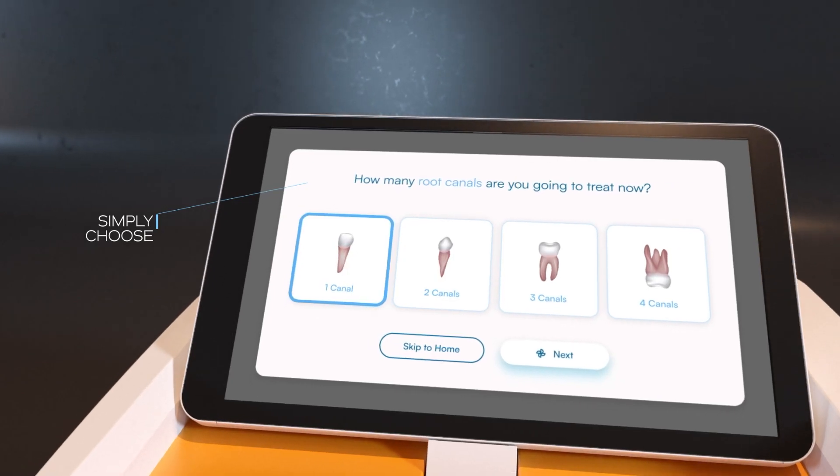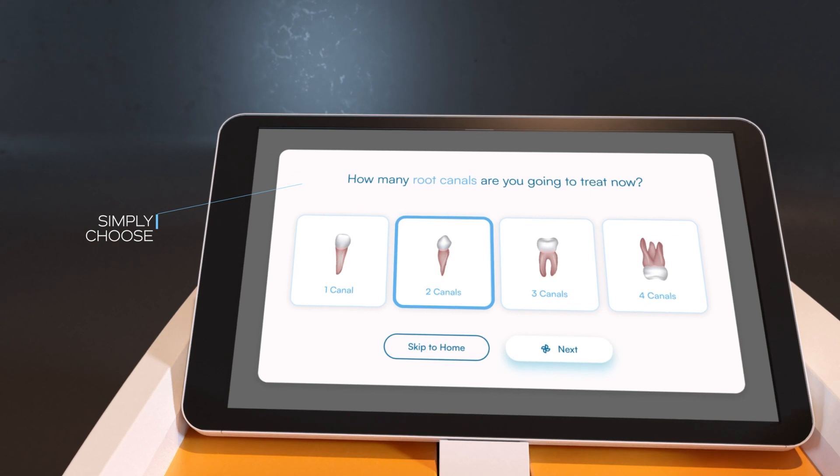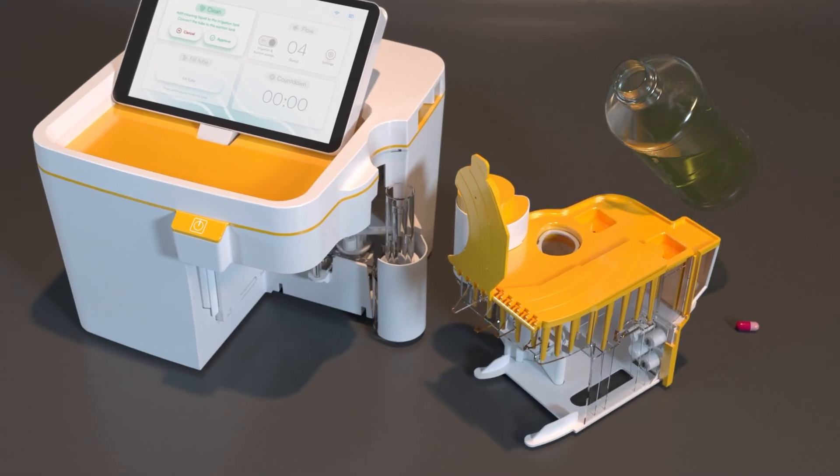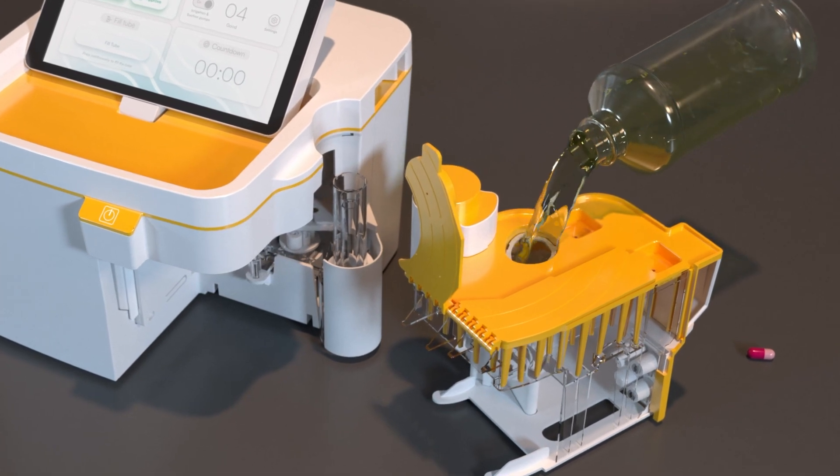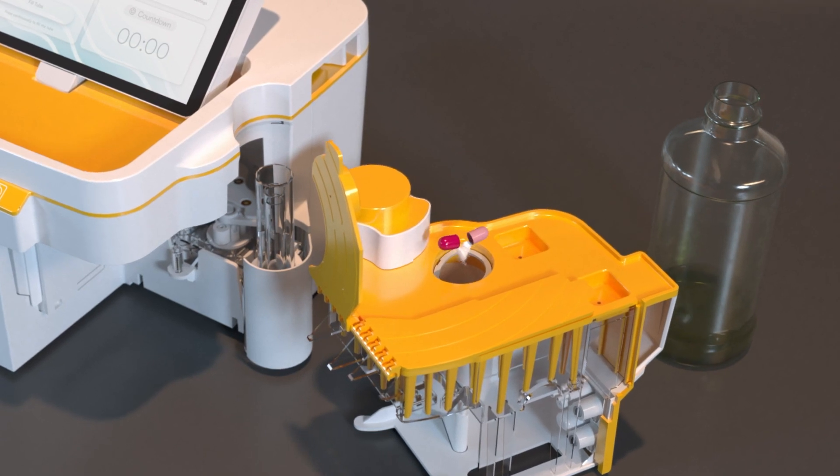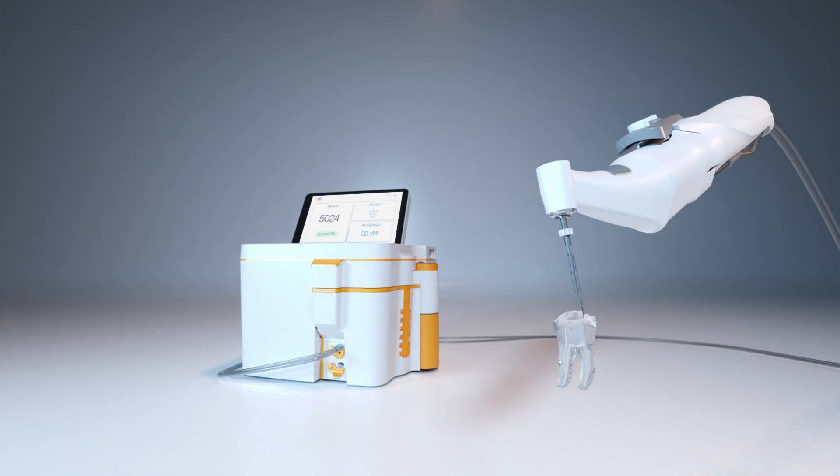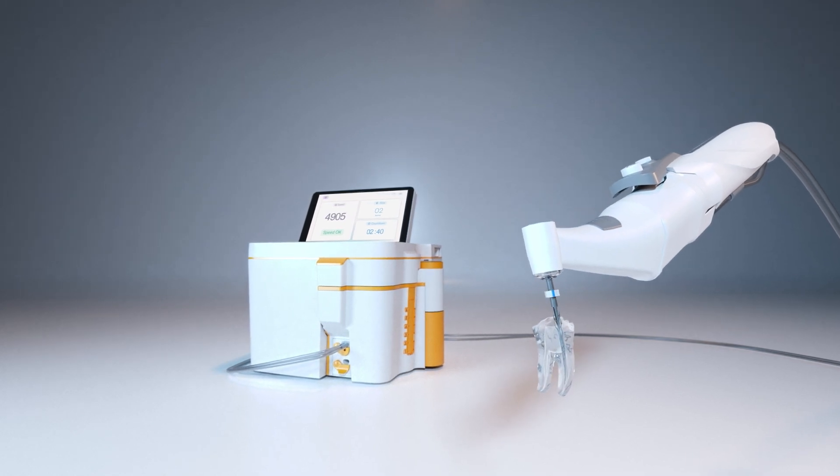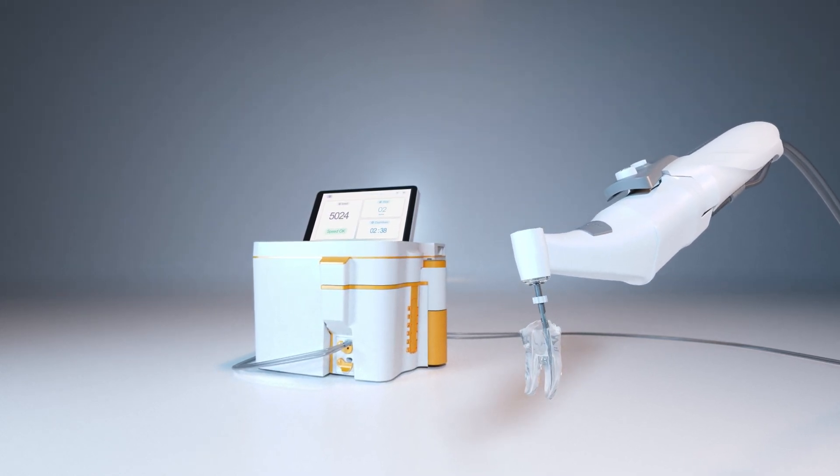To operate the system, the user simply chooses the number of canals to be treated, fills the irrigation tank with the appropriate amount of sodium hypochlorite, adds some HEDP for highly efficient disinfection and the device will mix it all up. Then all you need to do is turn on the endodontic motor and enjoy the best endodontic treatment you have ever experienced.